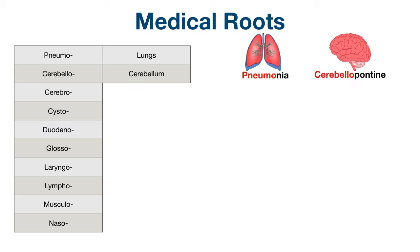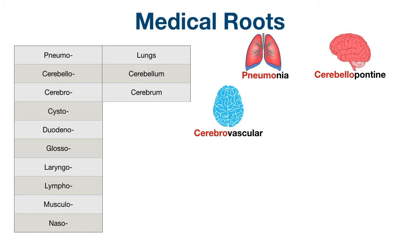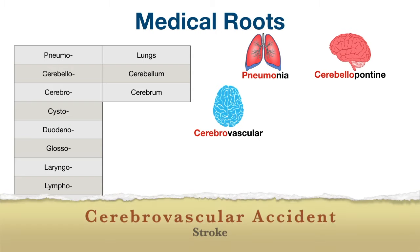Next, we have cerebello, which refers to the cerebellum of the brain. You might hear of the cerebellopontine angle or recess in anatomy, which refers to the cerebellum and the pons, especially the space between the two structures. Cerebro refers to the cerebrum of the brain. For example, cerebrovascular relates to the brain and its blood vessels. In medical terms, you might hear of a cerebrovascular accident, which is another way of saying a stroke.